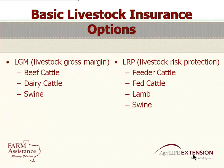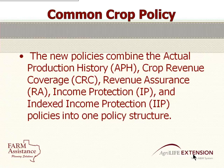On the livestock side we have two different products: LGM, which is Livestock Gross Margin, available for beef cattle, dairy cattle, and also swine in this area. Then LRP, which is really kind of like buying a put on animals — only you don't have to do it in contract size. You can do it for the number of animals you have. You can get that on feeder cattle, fed cattle, sheep, and swine.